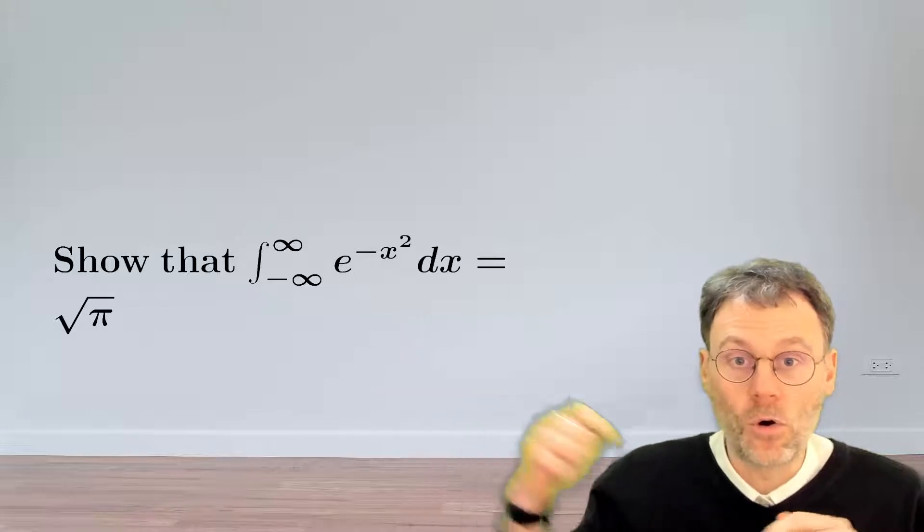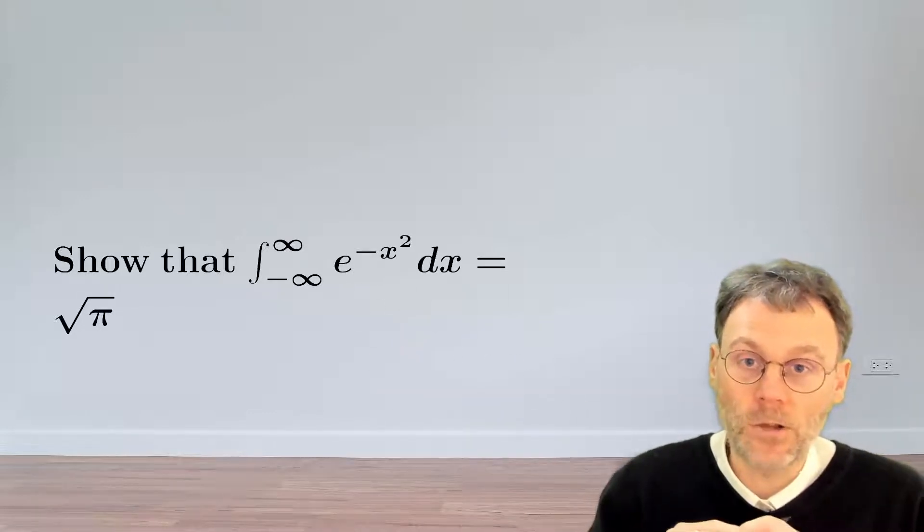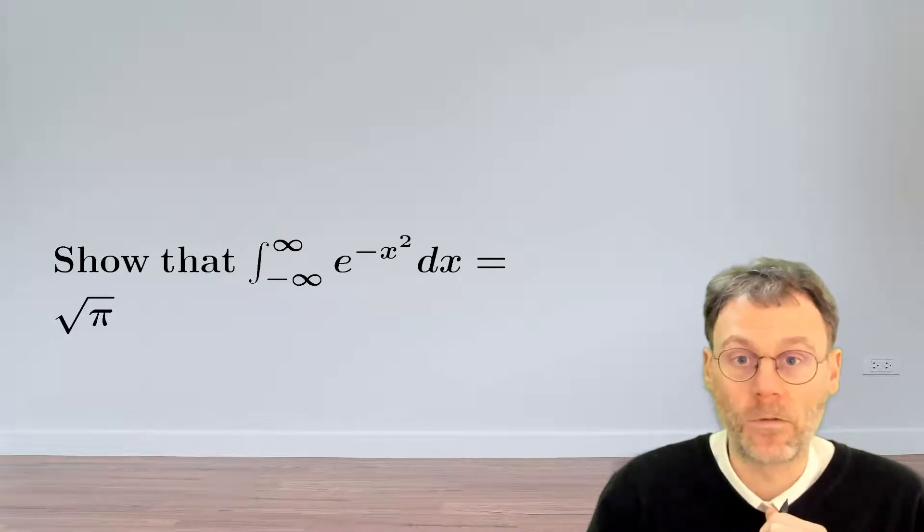What's the area under a Gaussian curve? Pause the video if you want to go into this calculation completely blind, otherwise keep watching for a small hint.